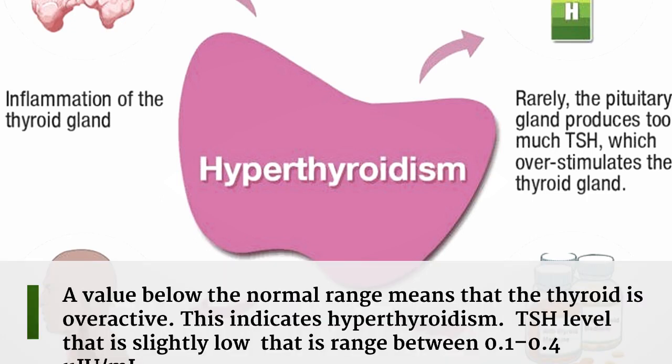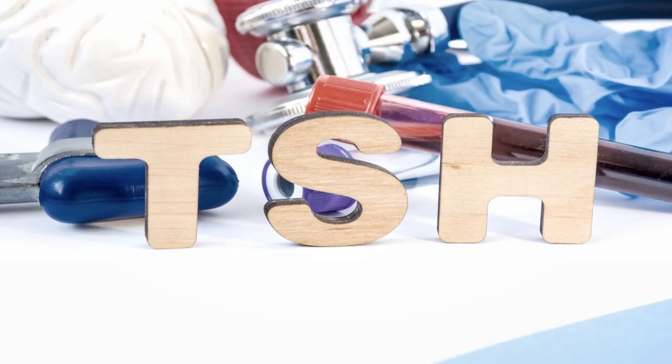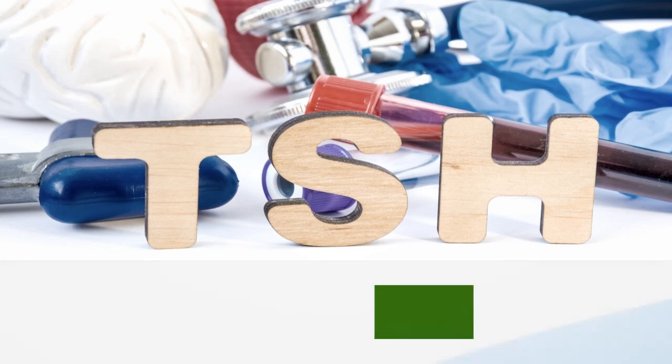A value below the normal range means the thyroid is overactive, indicating hyperthyroidism. A TSH level that is slightly low, in the range of 0.1 to 0.4 micro IU/mL, may also signal thyroid problems. Thyroid disorders are usually easy to manage with medications, and people with a thyroid disorder should do regular TSH testing to ensure their symptoms remain under control.